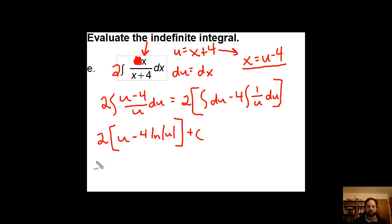If I go ahead and distribute this, I get 2u minus 8 natural log of u plus c. Let me go ahead and substitute back in my x's. I'm going to have 2 times u, which we defined as x plus 4, minus 8 times the natural logarithm of absolute value of x plus 4, and there is my c.